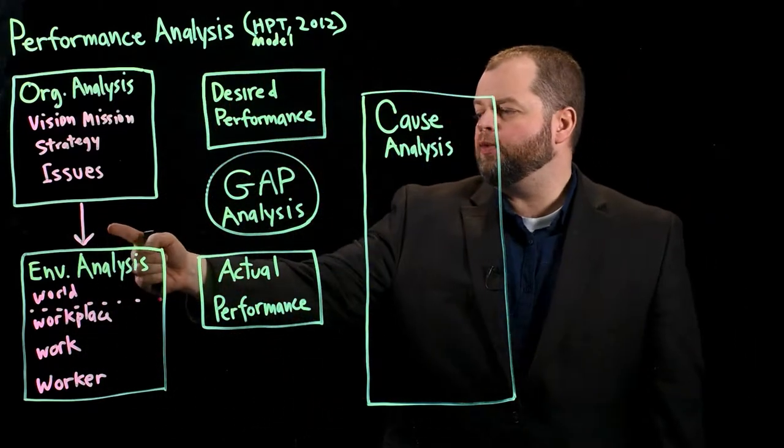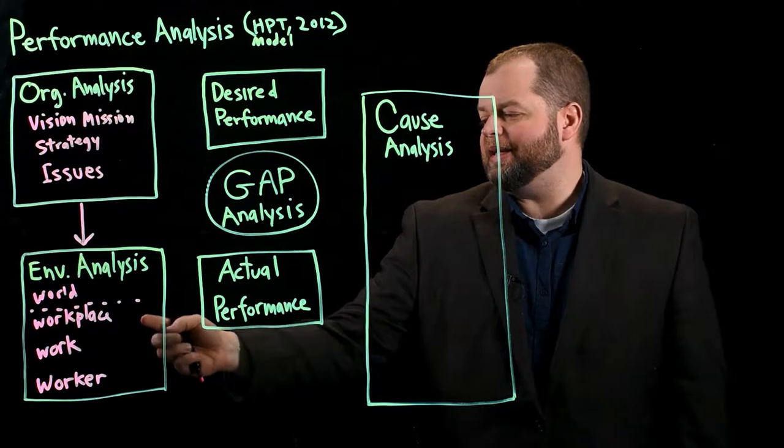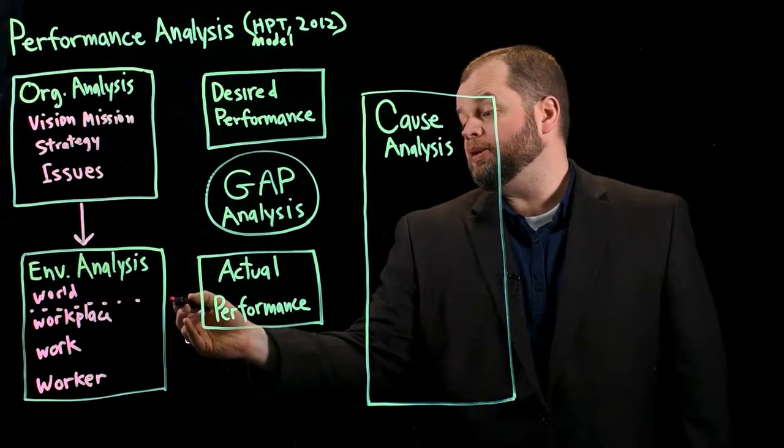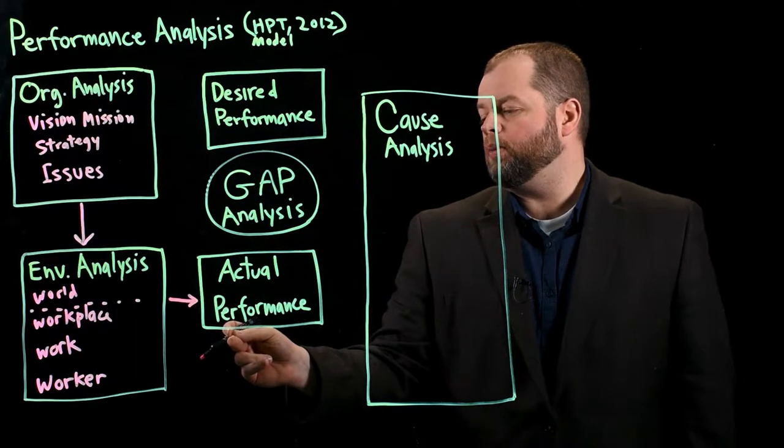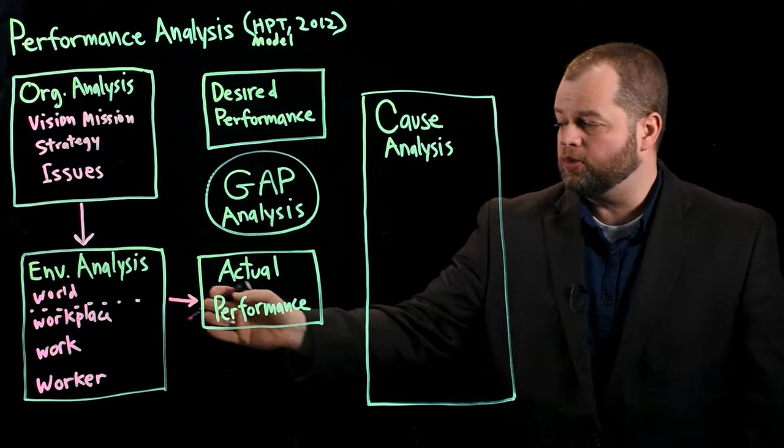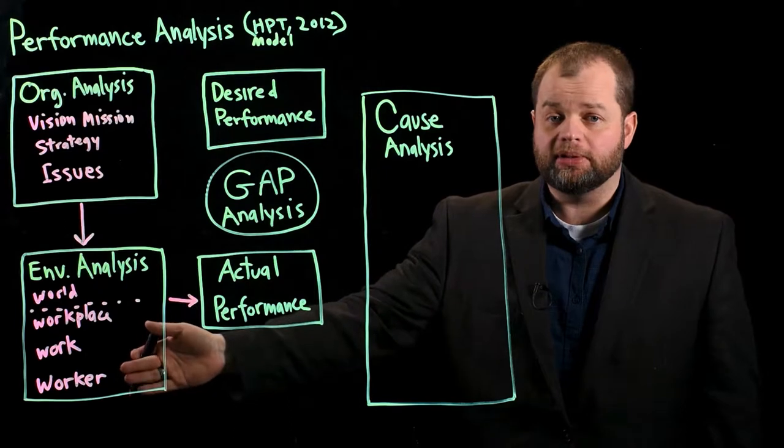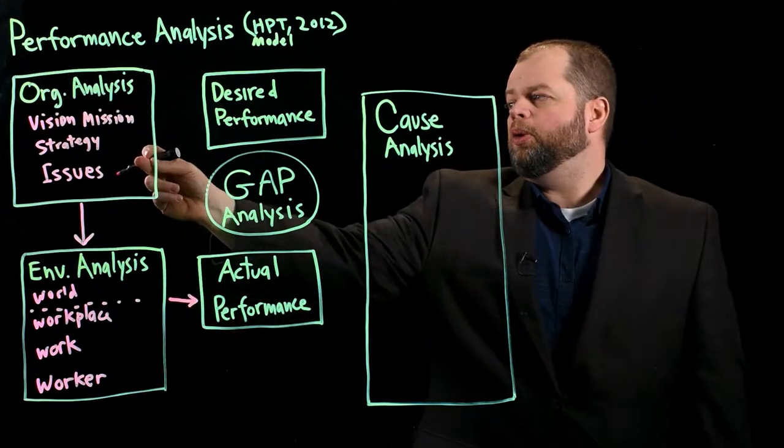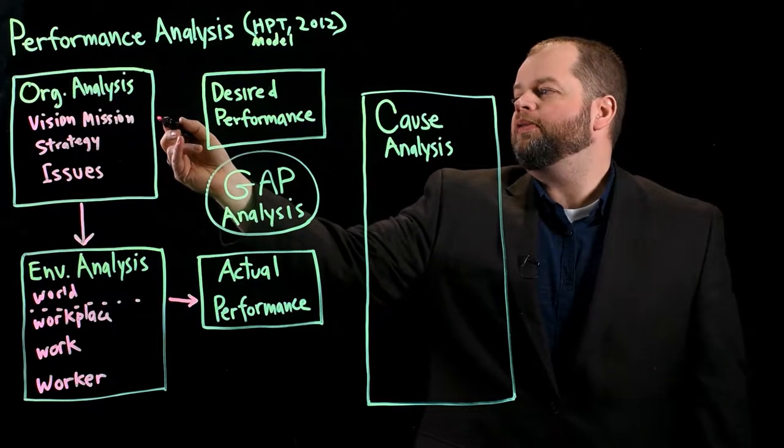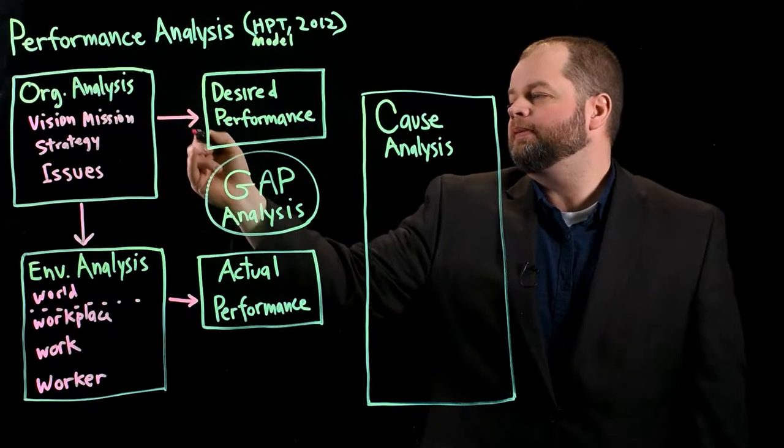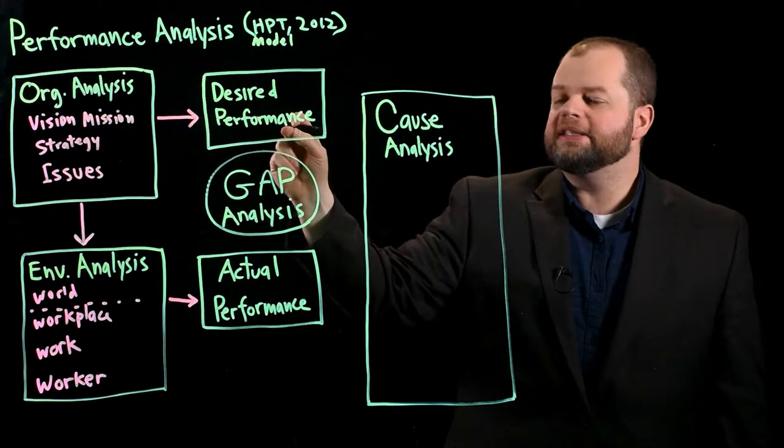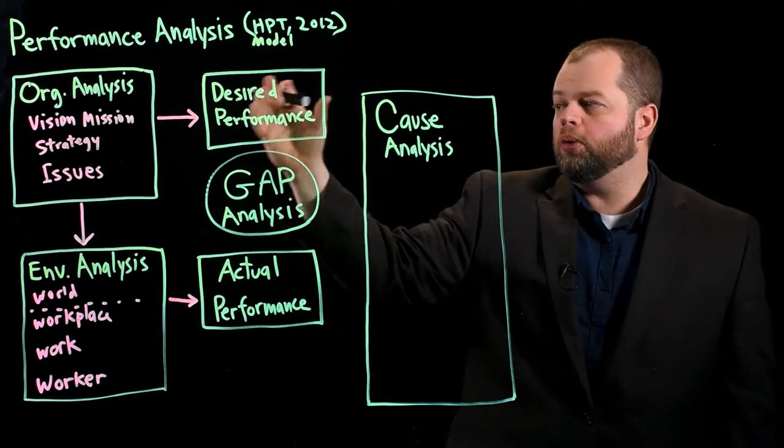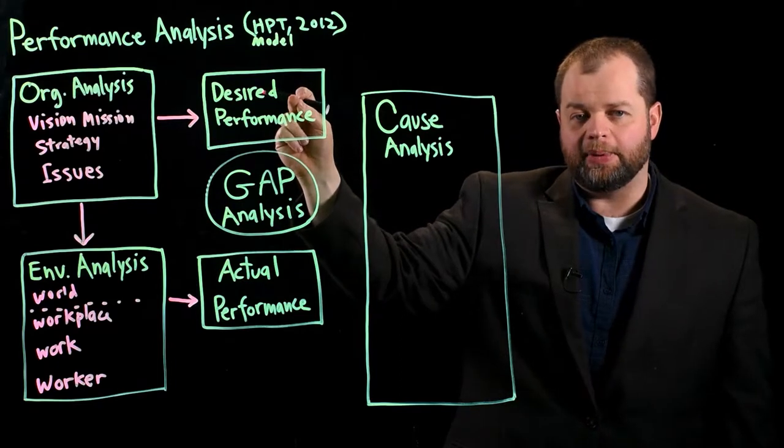So let's keep going here. So when you have a sense for what the environment actually is and how people are performing in the environment, then that really allows you to sort of tabulate what's the actual performance. And typically, when you do that, it's going to be at these several different levels of the organization. Now, from the organization analysis, you're able to sort of extrapolate, really understand the desired performance.